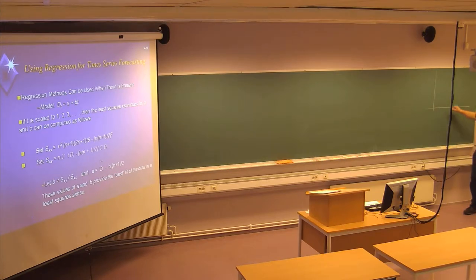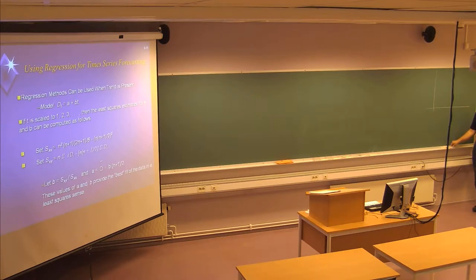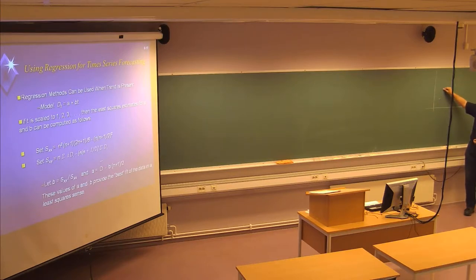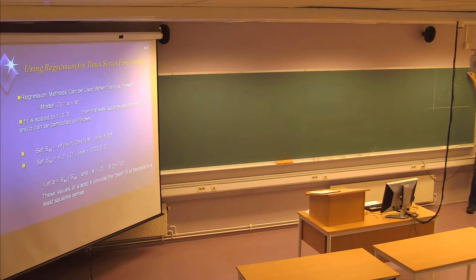We might have a situation where we get some data points looking like this. By using a method for stationary series like exponential smoothing or the moving average, this data material would give us some kind of average forecast. But we can clearly see that even with some variation, we will in general have an increasing trend, and the expected demand should be larger than in the previous period.